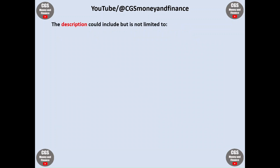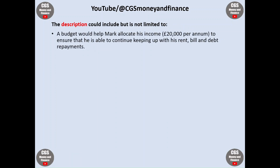So what could the description include? Well, a budget would help Mark allocate his income. He earns £20,000 per annum to ensure that he is able to continue keeping up with his rent, his bills, and his debt repayments.